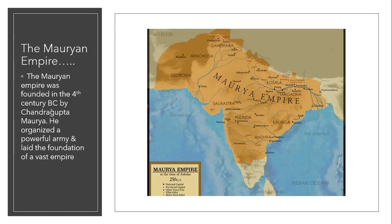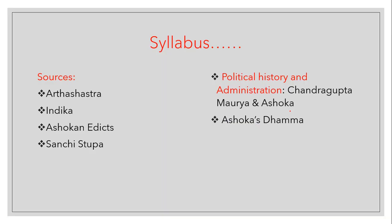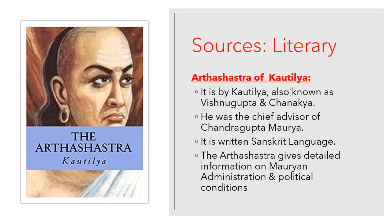The Mauryan Empire was founded in the fourth century BC by Chandragupta Maurya. He was the founder of the Mauryan Empire. He organized a powerful army and laid the foundation of a vast empire through many wars and battles, establishing what we now know as the Maurya Empire.